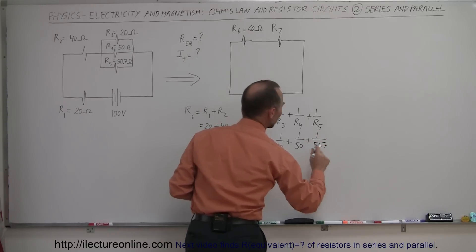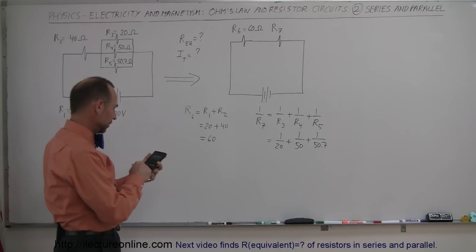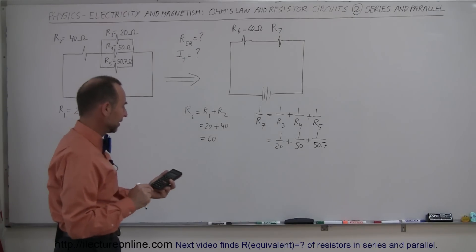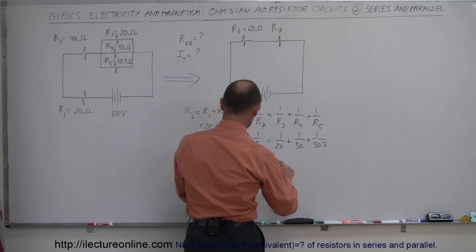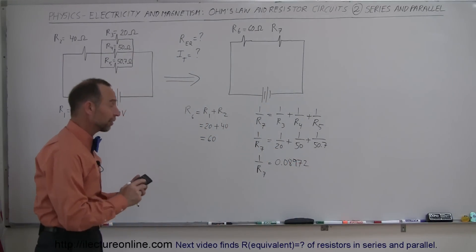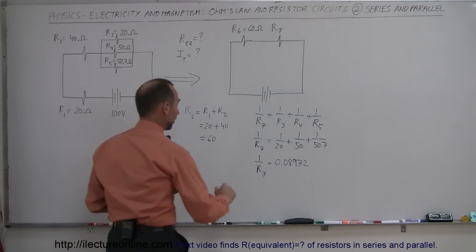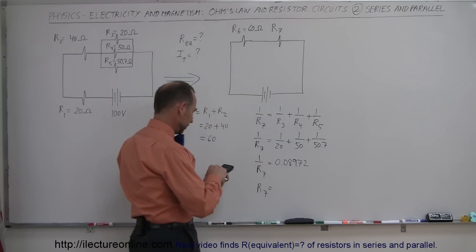So this is equal to 1 over 20 plus 1 over 50 plus 1 over 50.7. Let's figure out what that is equal to. So 1 divided by 20 plus 1 divided by 50 plus 1 divided by 50.7. So we have 1 over R7 is equal to 0.08972. And so then to find out what the value is for R7, we take the inverse of that. So we take R7 equal to the inverse of that.